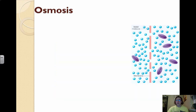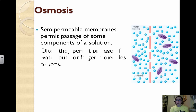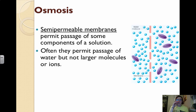Finally, we get into osmosis. In the body and other systems, semi-permeable membranes permit passage of some components — semi-permeable means some things can get through. Sometimes they permit water but not larger molecules or ions.